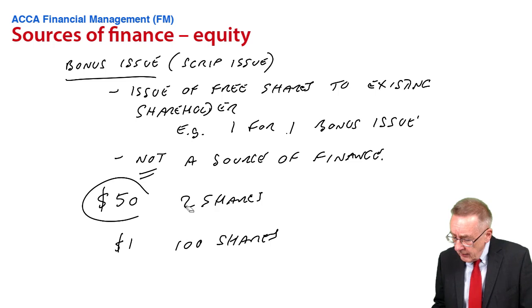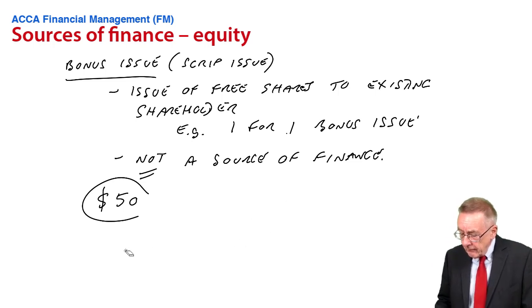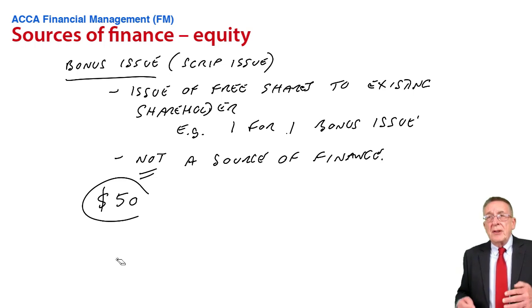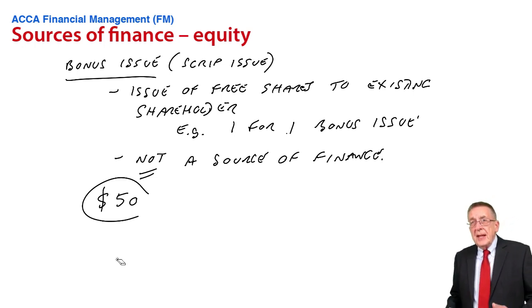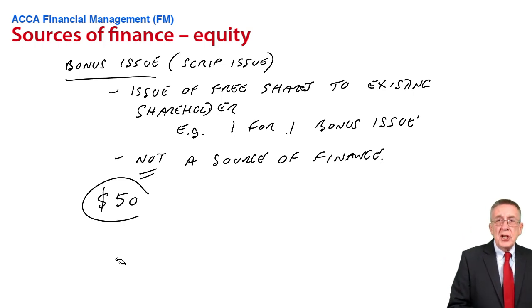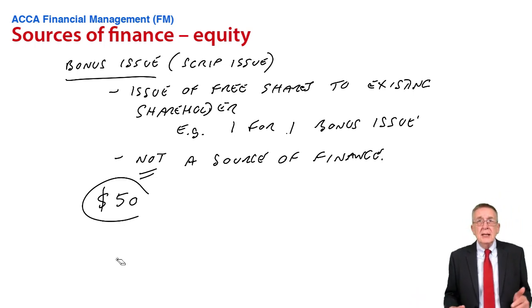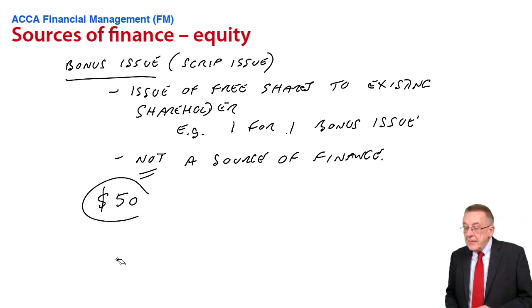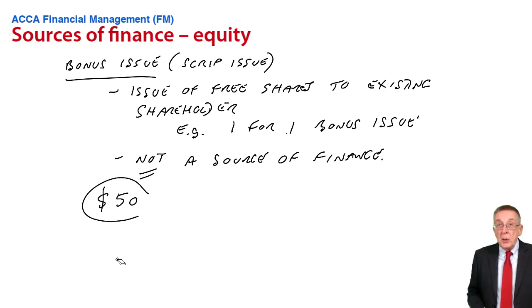So when the share price gets very high, shareholders aren't buying and selling as many. I appreciate, on the stock exchange, when shares have already been issued, if you buy shares on the stock exchange, you're buying from another shareholder. It's a market - shareholders are buying and selling shares to each other. Well, if the share price gets high, people aren't doing much buying and selling. Shareholders don't like that. They want to be easily able to sell the shares to somebody else. So if they have a scrip issue, a bonus issue...